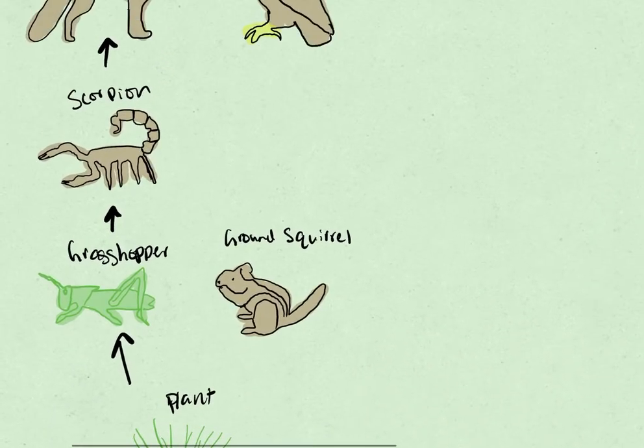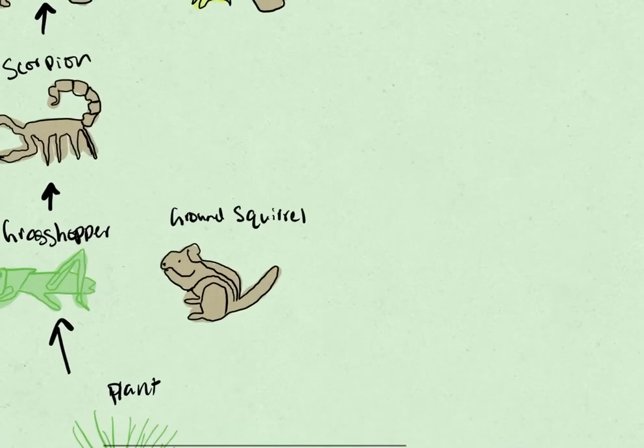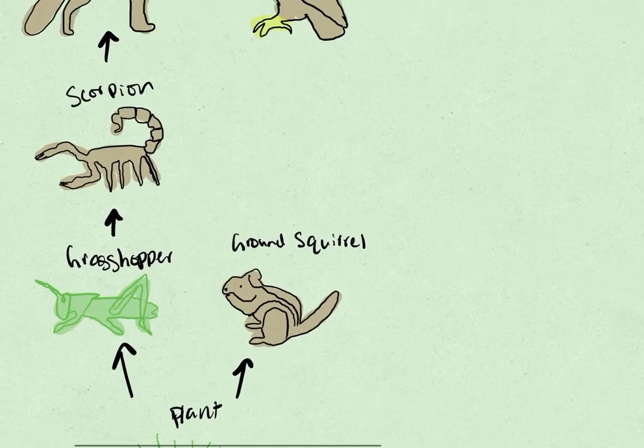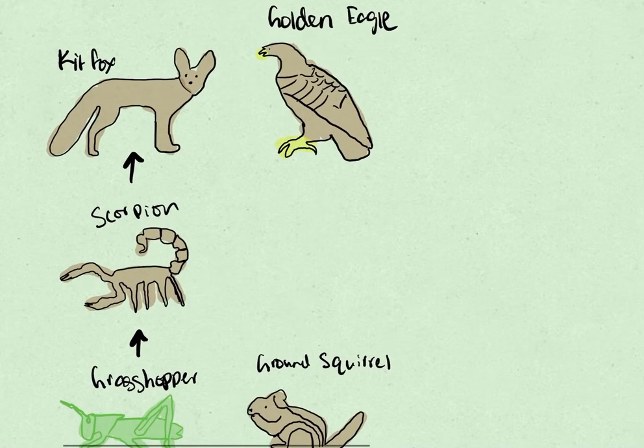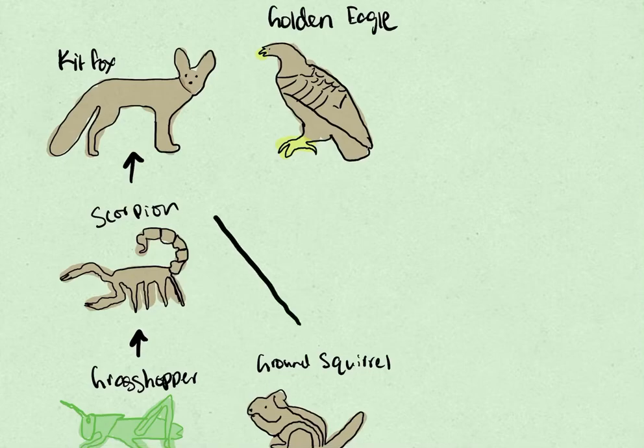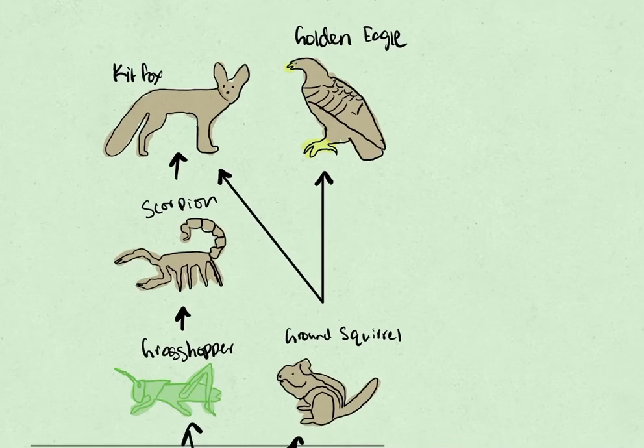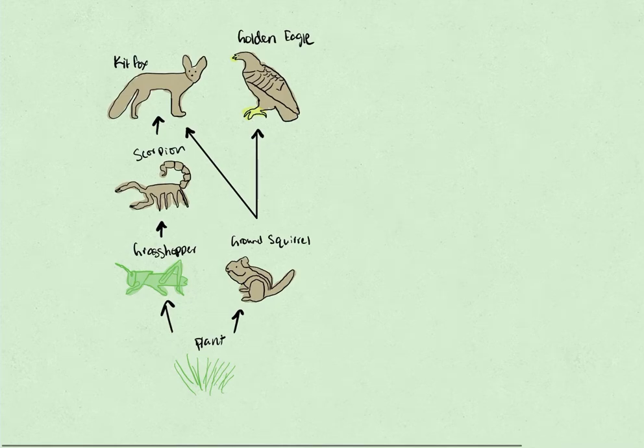But now we're introduced with the ground squirrel, in which the ground squirrel gets its energy from the plant, so it eats the plant. And the ground squirrel can be eaten by either the kit fox or the golden eagle in this ecosystem. So that shows how there can be different patterns that are possible.